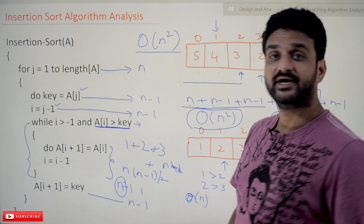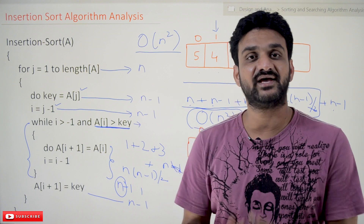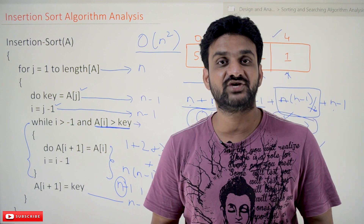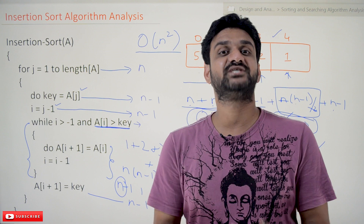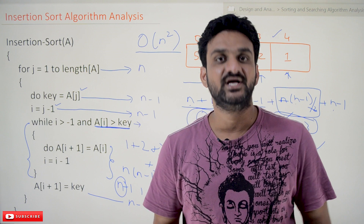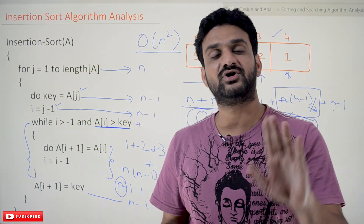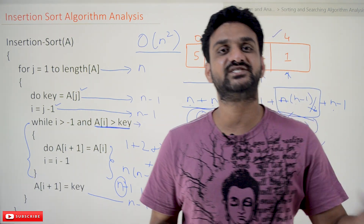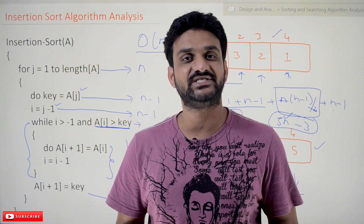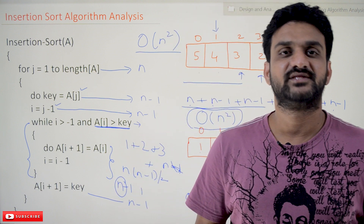So the efficiency of insertion sort is O(n²). This is all about insertion sort algorithm analysis. Hope you got clarity on this concept. Thanks for watching. If you haven't subscribed to our channel, please subscribe and press the bell icon for the latest updates. If you have any doubts, post them in the comment section below. If this video was helpful, please give a like and share it with your friends so they can also benefit.